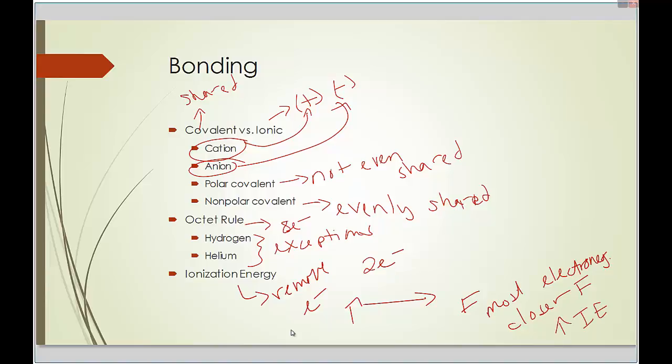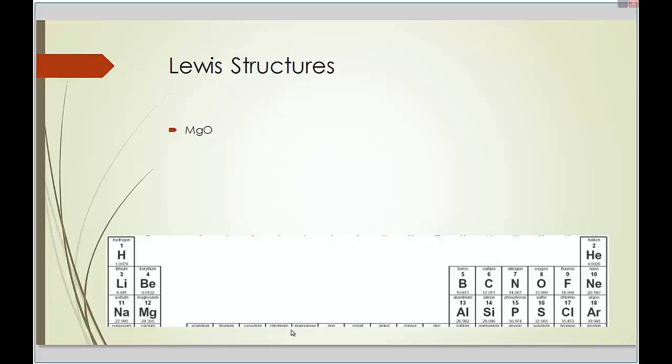So let's do some of those structures. Magnesium is here. It's in the second row. You know how many electrons something has by what row it's in. One, two, three, four, five, six, seven, eight. So it's in the second row. So magnesium has 2 electrons. Oxygen is here. It has 6 electrons. One, two, three, four, five, six. You go around singles first and then go back and pair them up.